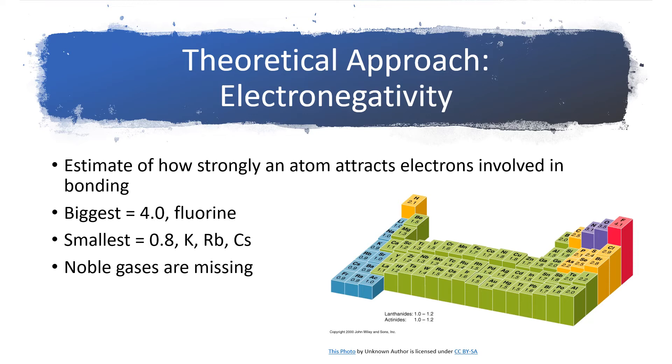I did want to point out that noble gases are missing. If you look on the far right part of the table, you do not see argon, neon, and helium. The reason we're not seeing those elements goes back to our definition - it's how strongly an atom attracts electrons involved in bonding, and the noble gases generally speaking don't form bonds.